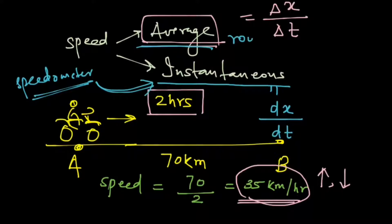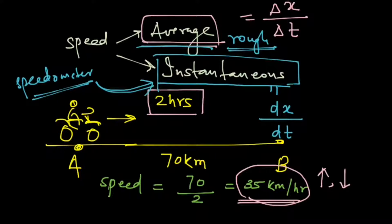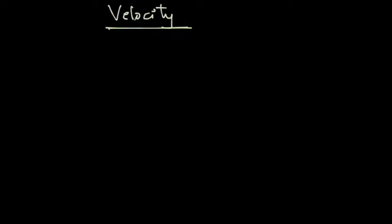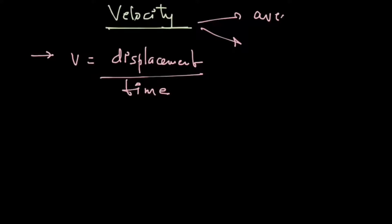Average just gives us a rough idea, not the exact value of the speed. So from now on when we talk about speed, we will mostly mean the instantaneous speed. Let's talk about velocity now. Here is how we define velocity: v equals to displacement upon time. So that is the definition of velocity. As speed is of two types, so is velocity: the average velocity and the instantaneous velocity.